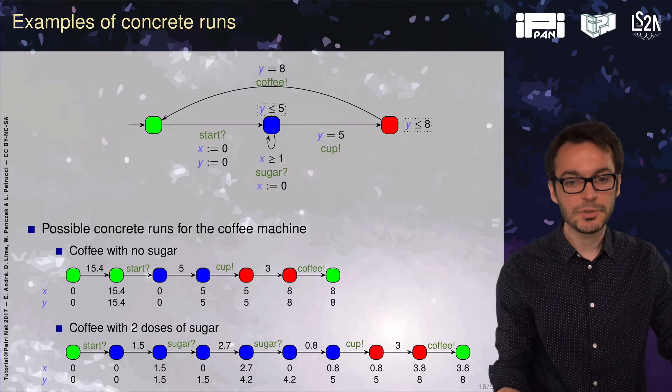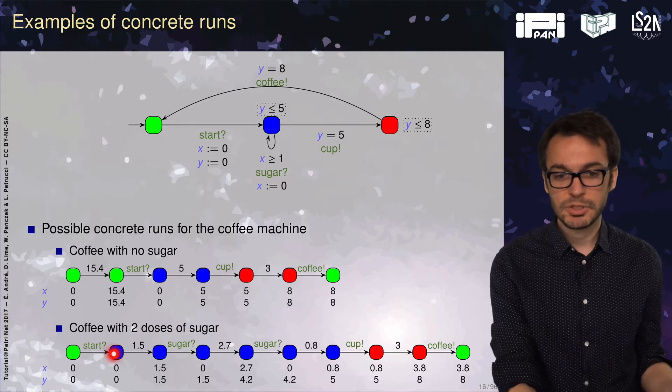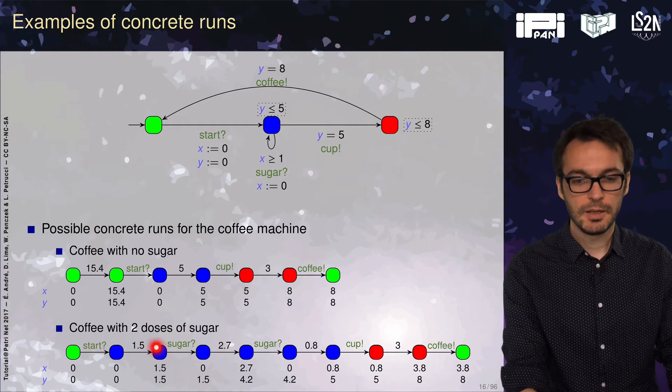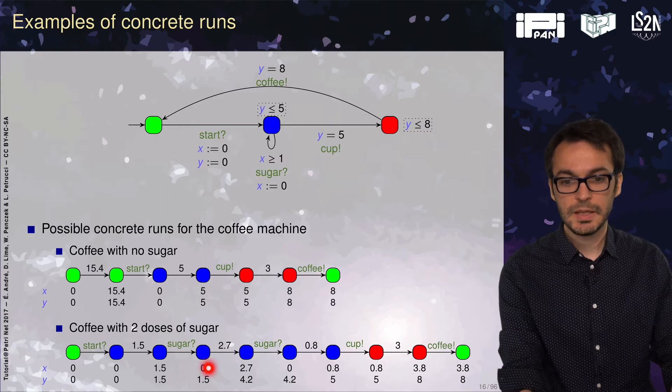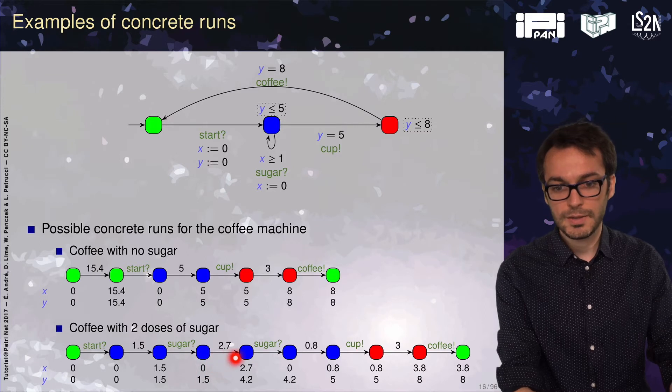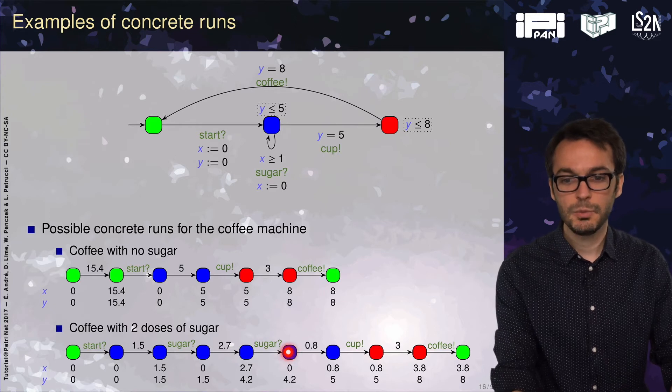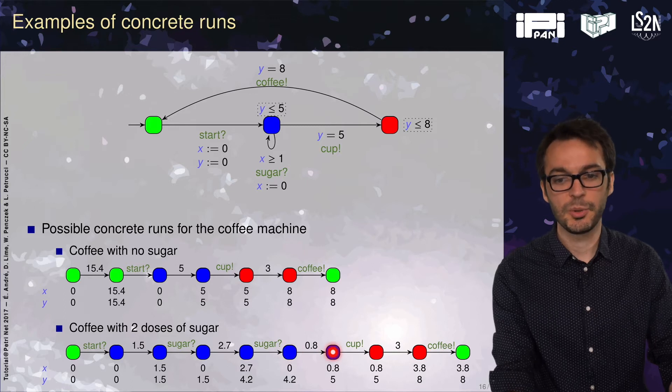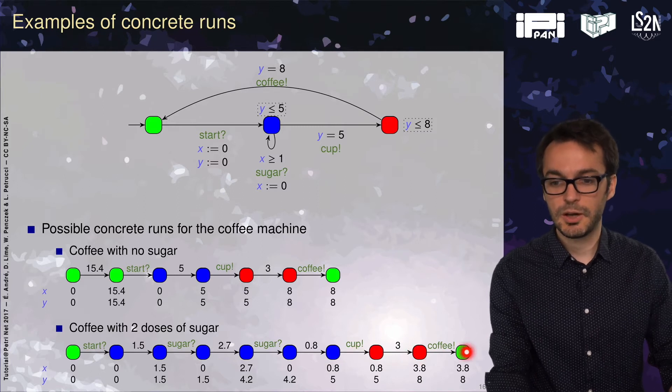If you want a coffee with two doses of sugar: you're in the green location, press start button. You can wait more than one and less than five, suppose 1.5. Then press the sugar button. Notice that the x clock is being reset. Then wait any time more than one and less than the remaining time, for instance 2.7. Press the sugar button again. Then wait until y equals 5 is satisfied, which is 0.8 time units. Then we get the cup, wait three time units and get our coffee.